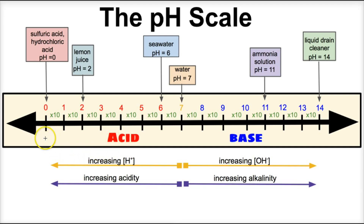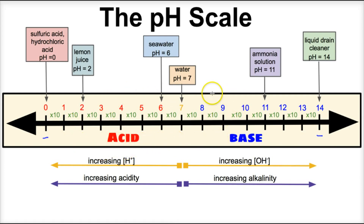The pH scale ranges from zero here on the left, all the way to 14 here on the right. Everything between zero and seven on the pH scale is an acid, or is acidic, and everything between seven and 14 is a base, or is alkaline.